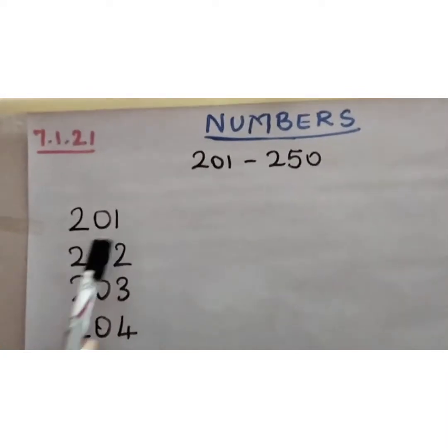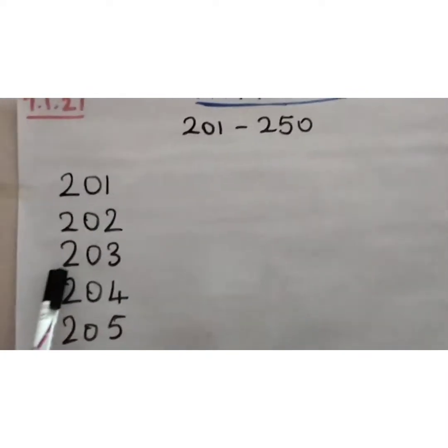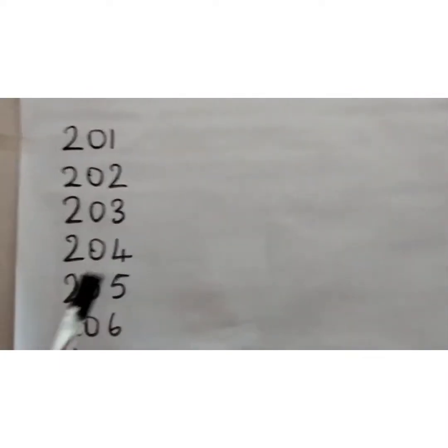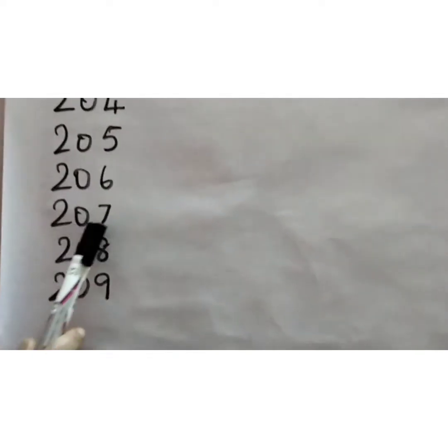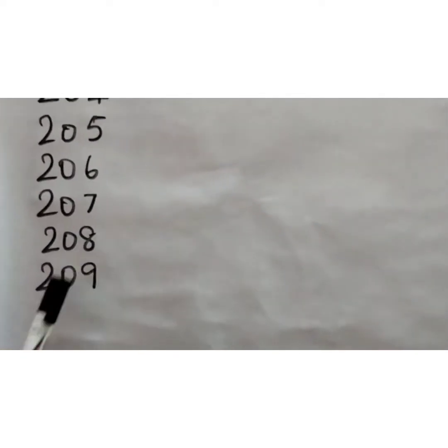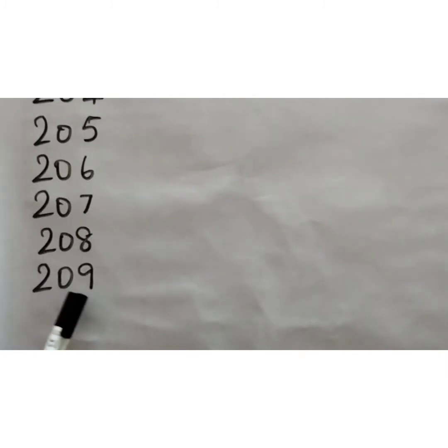I have written here 201, 202, 203, 204, 205, 206, 207, 208, 209. After this 209, tell me the number what will come? 200 and after 9 what will come? 10. Three digits only. Remember that in mind only 3 digit numbers. Okay, 210.